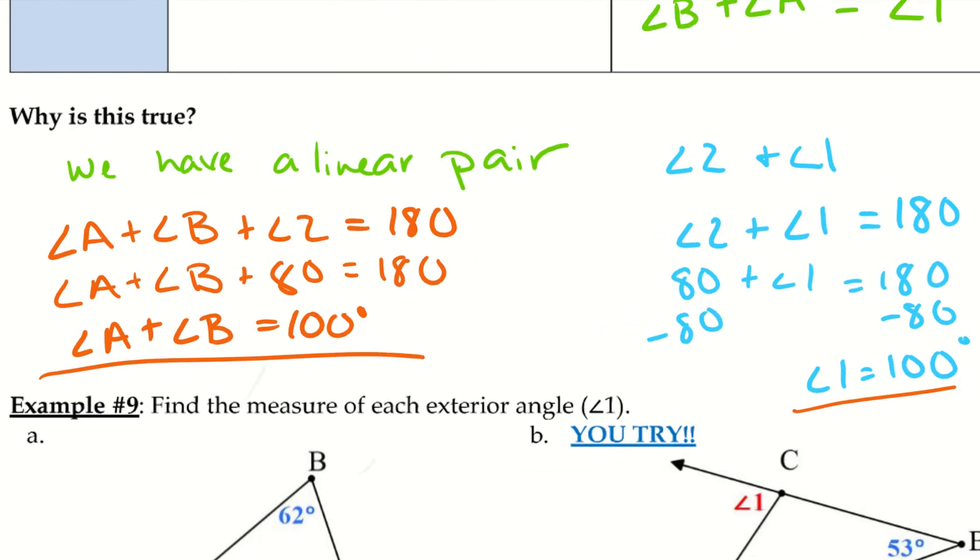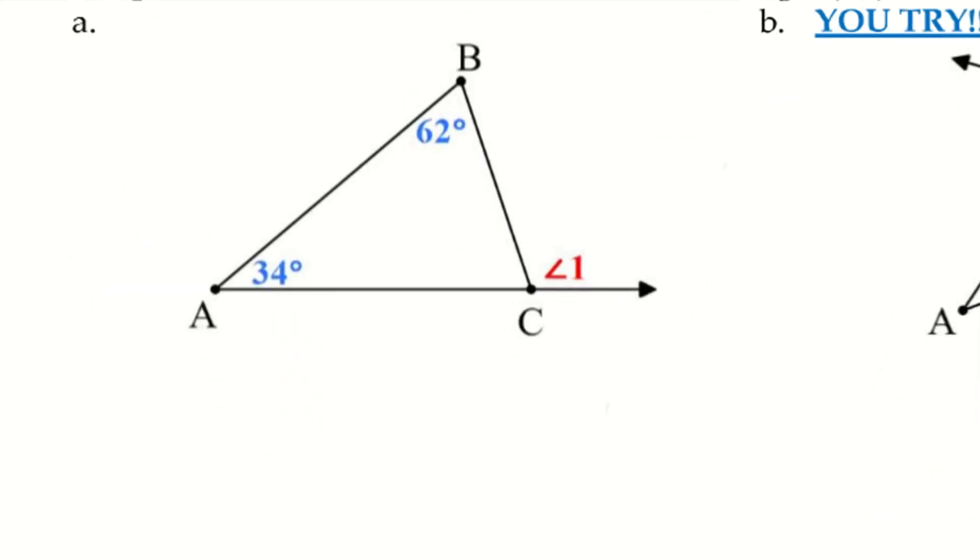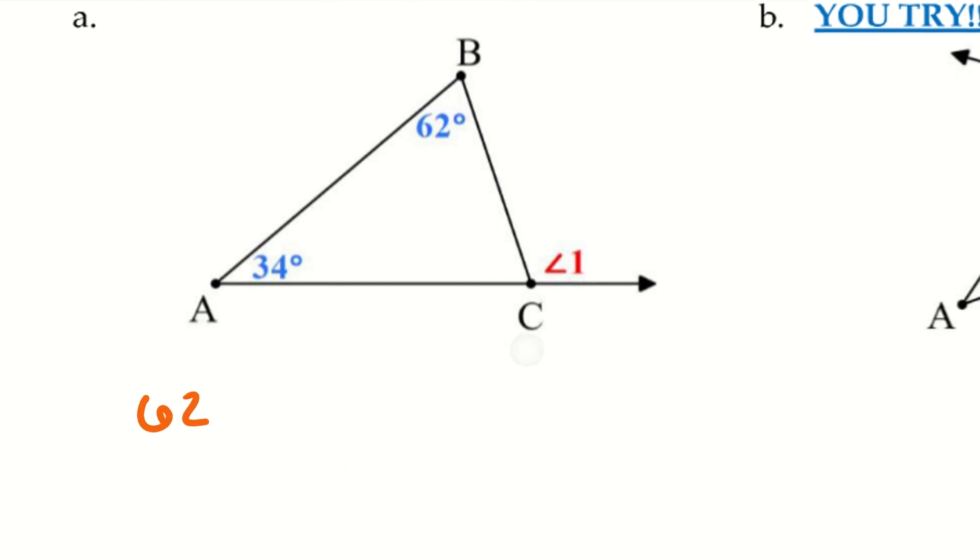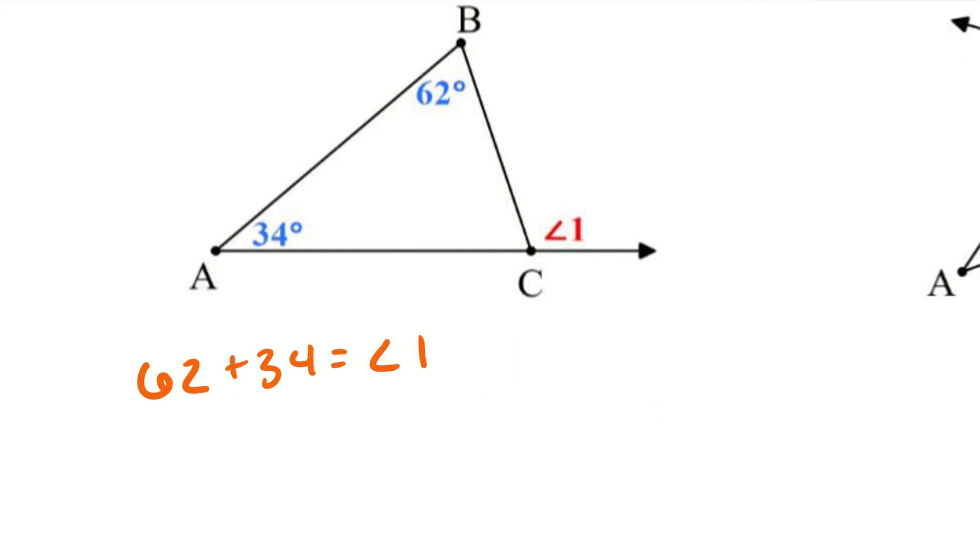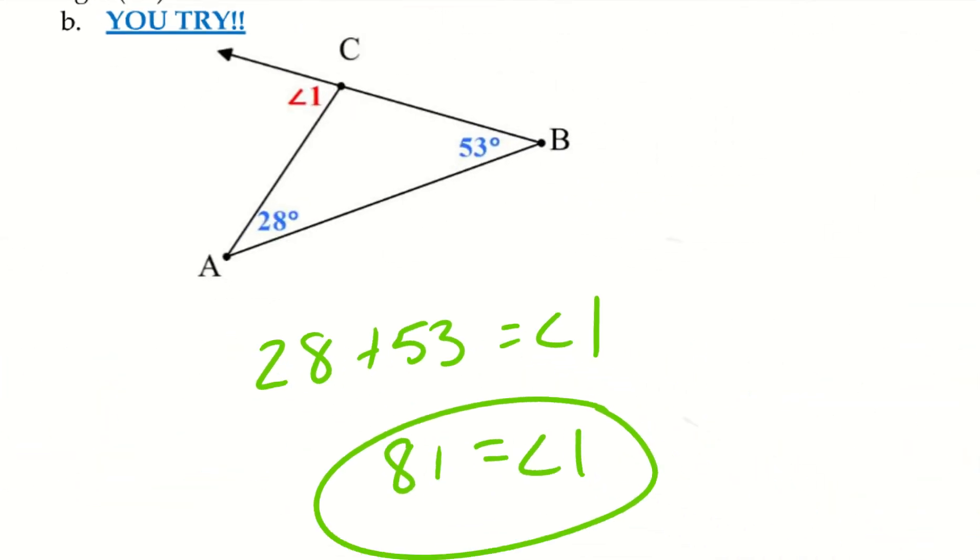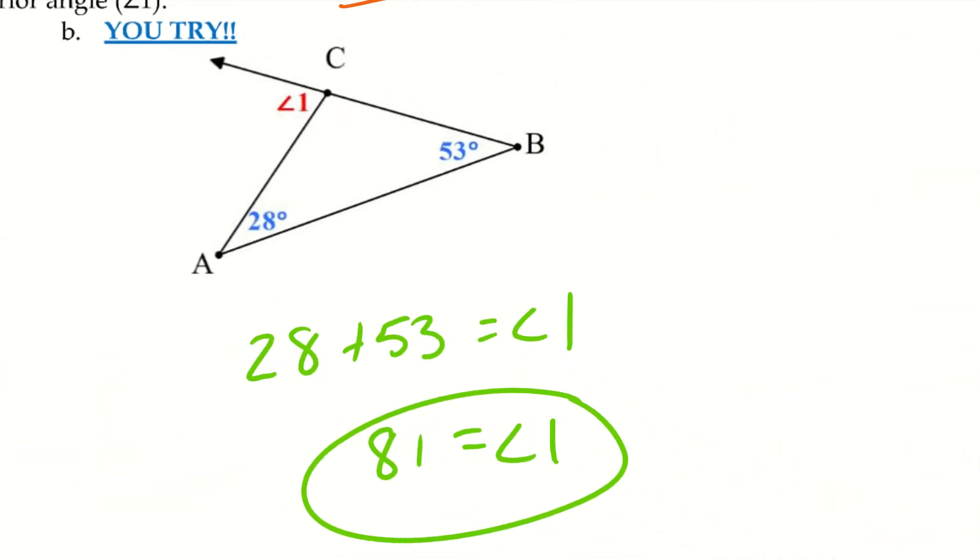Okay, let's go ahead and try a couple examples. So we want to find the measure of angle 1. So that means I'm going to take my two remote interiors. 62 plus 34 equals angle 1. So I can go ahead and combine those. I get 96 equals angle 1. Go ahead and take a second and try B. Alright, let's go ahead and take a look at it. I ended up with angle 1 equals 81 degrees.